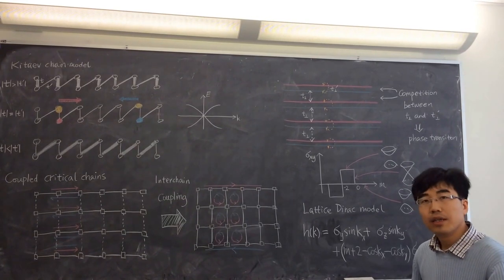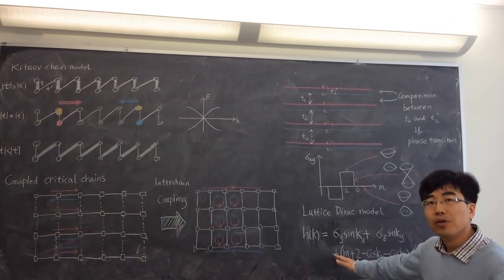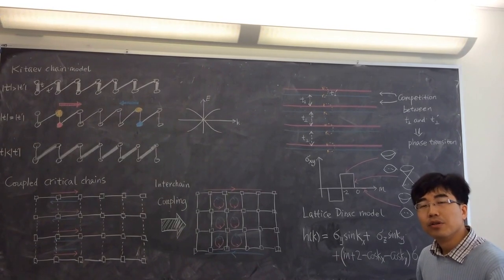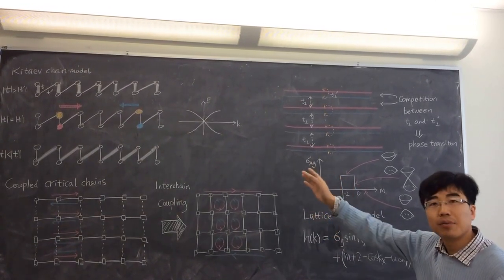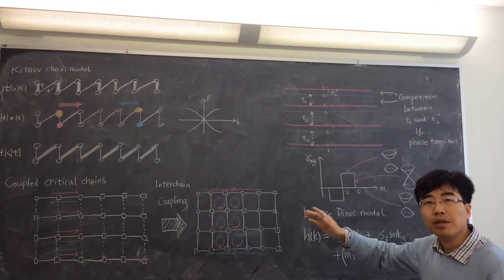So in the end, I just want to emphasize this model, which we call the lattice Dirac model. So we have shown these by pictures. If you write down the Hamiltonian, you start by a Kitaev chain and couple them.